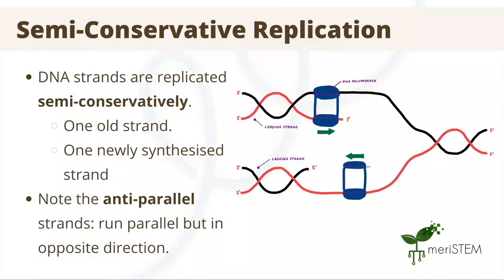It is replicated semi-conservatively, meaning that the resulting two strands of DNA consist of one old strand and one newly synthesized strand. We can observe this in this simplified diagram of replication, where an enzyme known as DNA polymerase 3 uses old strands as a template to synthesize new strands. Also, note that the strands are anti-parallel, meaning that they are running parallel to each other but are going in opposite directions.